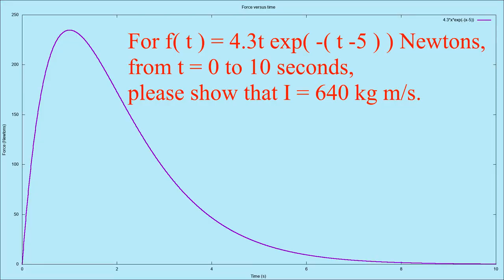Example two. For F of t equals 4.3 times t times e to the minus t minus 5 newtons, from t equals 0 to 10 seconds, please show that I equals 640 kilogram meter per second.